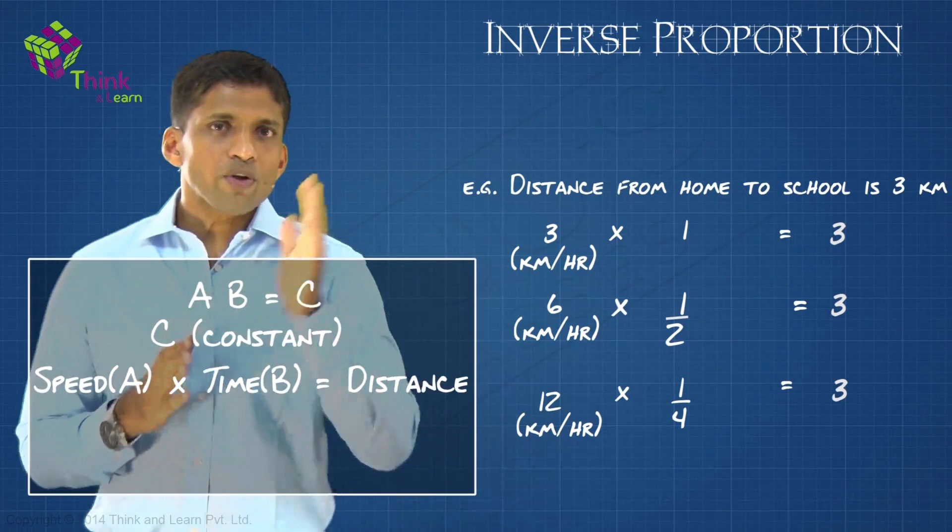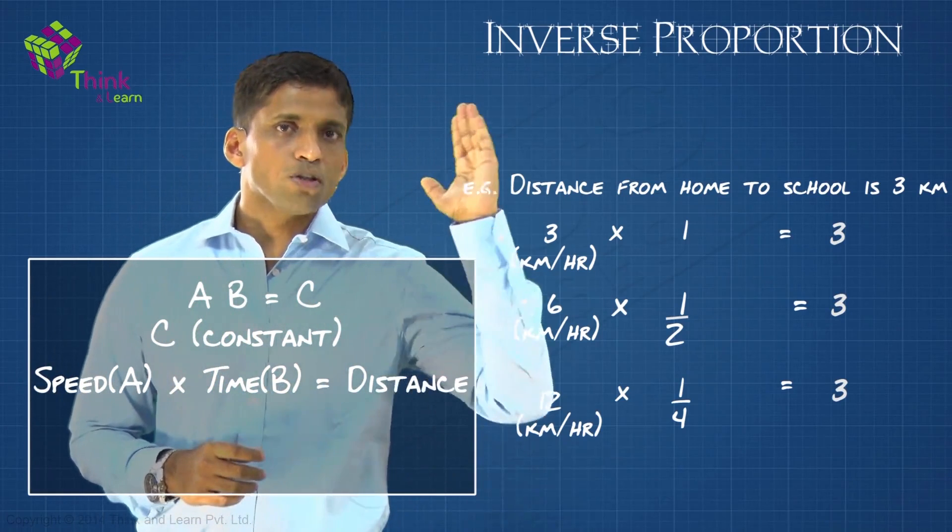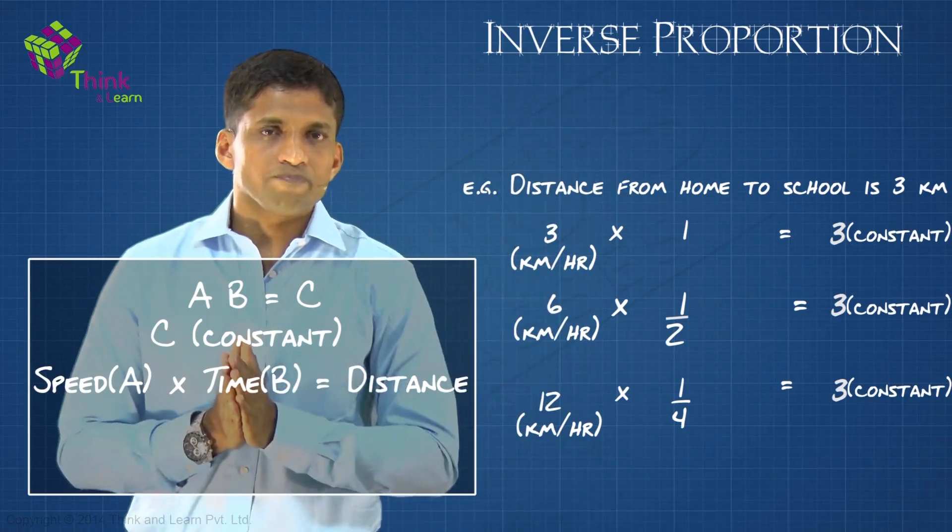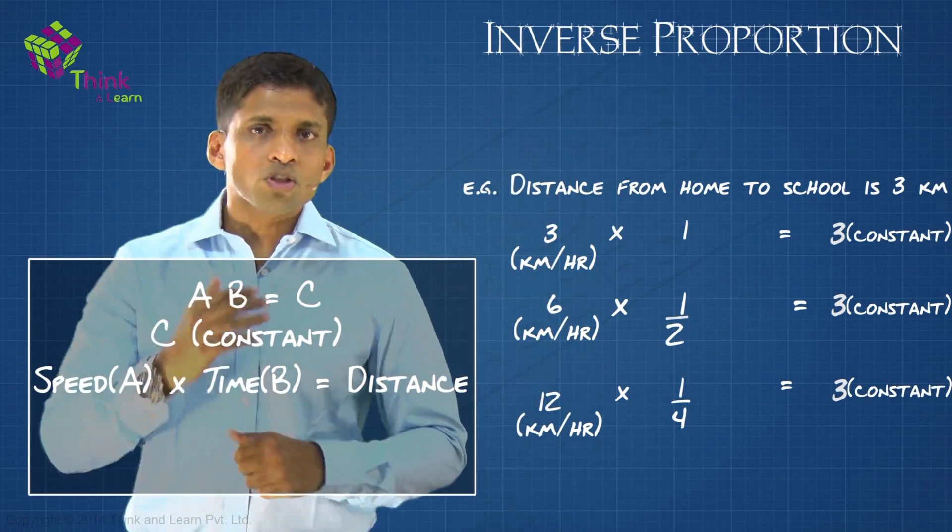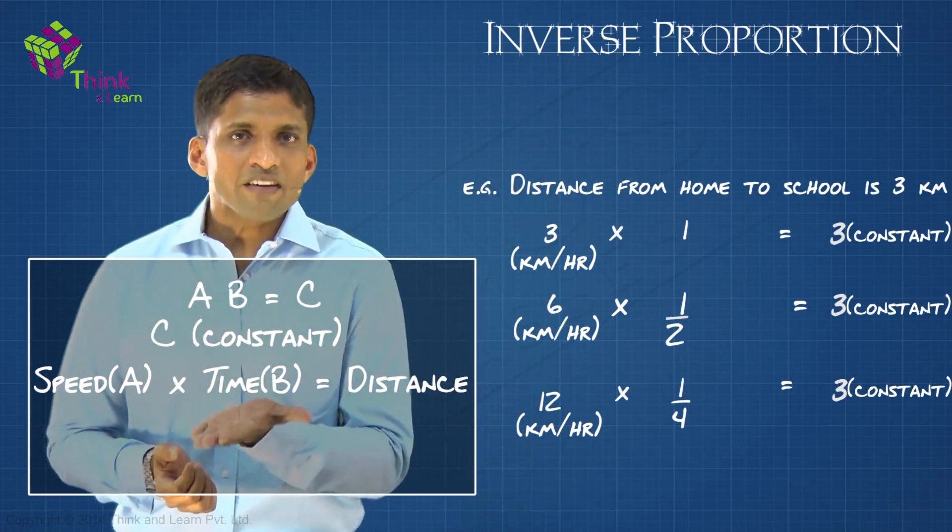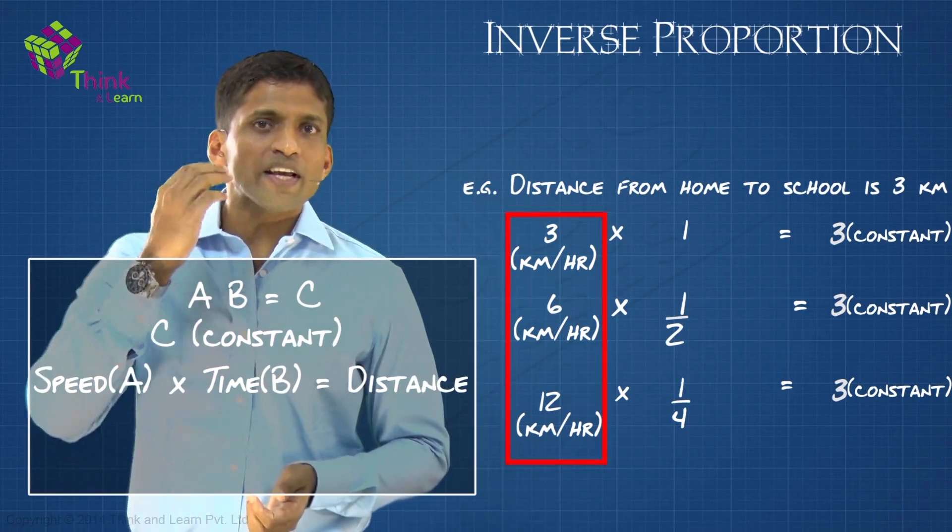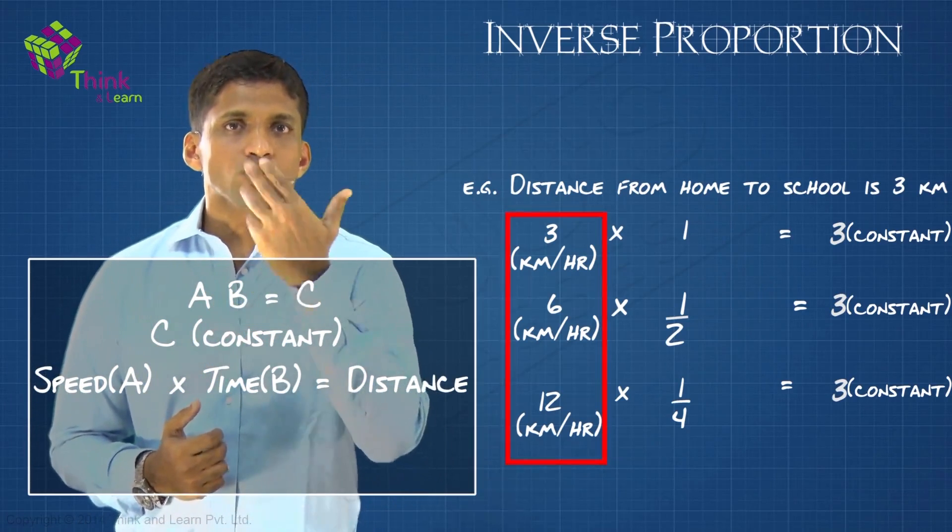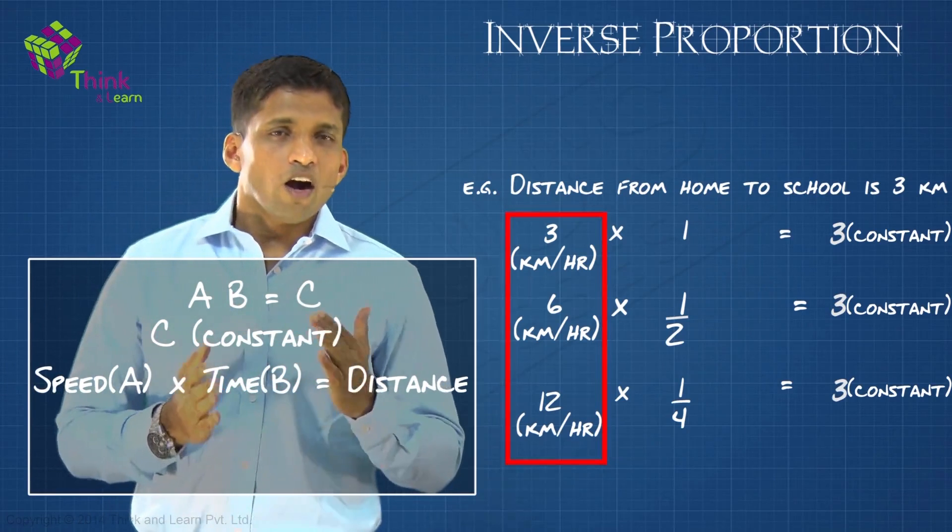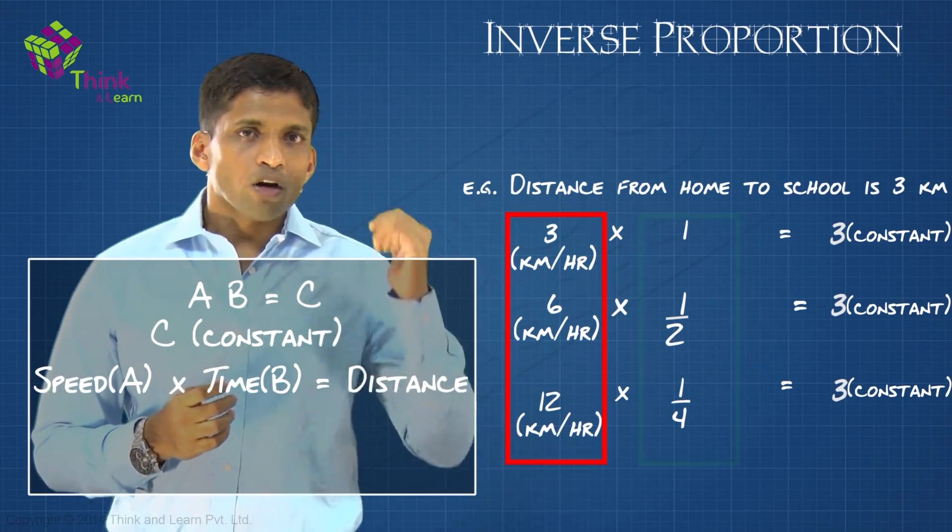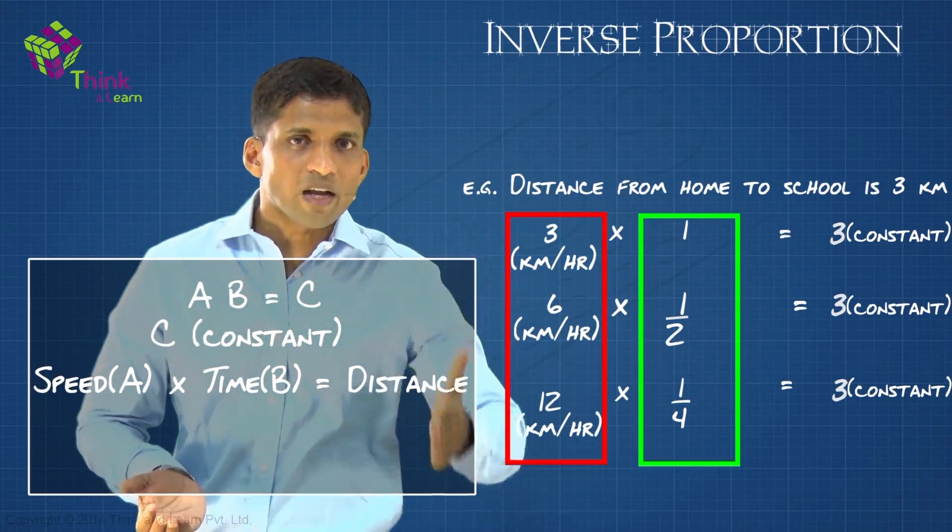What can you observe here? If you see this table, it's very clear: A into B equal to C where C is constant. When C is constant, you can easily understand that as you increased your speed from 3 to 6 to 12, from walking to running to cycling, what is happening to time taken? It's coming down. You increase the speed, time taken is coming down.